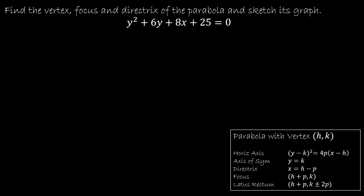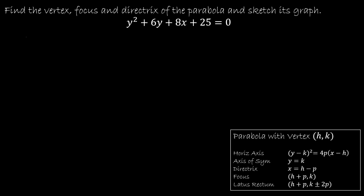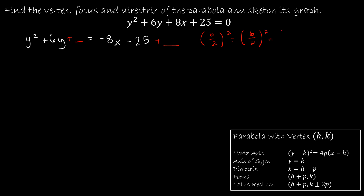Let's do another example going in the opposite direction. The first example had a standard parabola that opens up or down. Now I've got a y² value instead of x², which means the graph opens left or right. We start the same way: y² + 6y, leaving a space, then subtract 8x and subtract 25 from each side. The blank is (b/2)², which is (6/2)² = 3² = 9 — keeping in mind that the 3 is important. So I add 9 to each side.